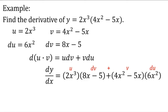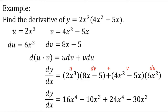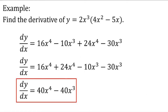Can you follow? Then we will multiply the terms. This will become dy over dx equals 16x to the fourth minus 10x cubed plus 24x to the fourth minus 30x cubed. Combine the like terms: 16x to the fourth plus 24x to the fourth equals 40x to the fourth; negative 10x cubed minus 30x cubed equals negative 40x cubed. So our final answer is dy over dx equals 40x to the fourth minus 40x cubed.